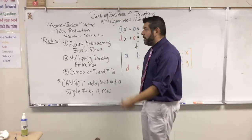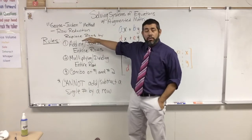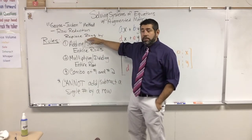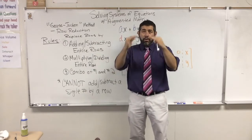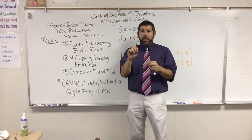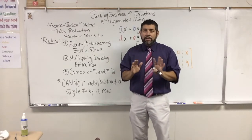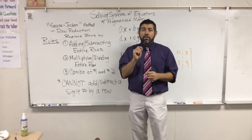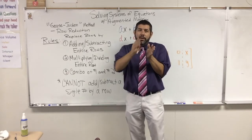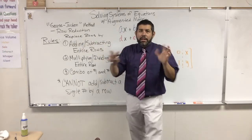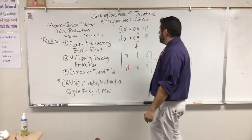Here are some rules you need to follow when doing Gauss-Jordan elimination. We can replace rows by adding or subtracting entire rows from each other. We can multiply or divide an entire row, or do a combination of both at once. One thing we cannot do — please do not do this — you cannot add or subtract a single number into an entire row. Don't add a number into a row.